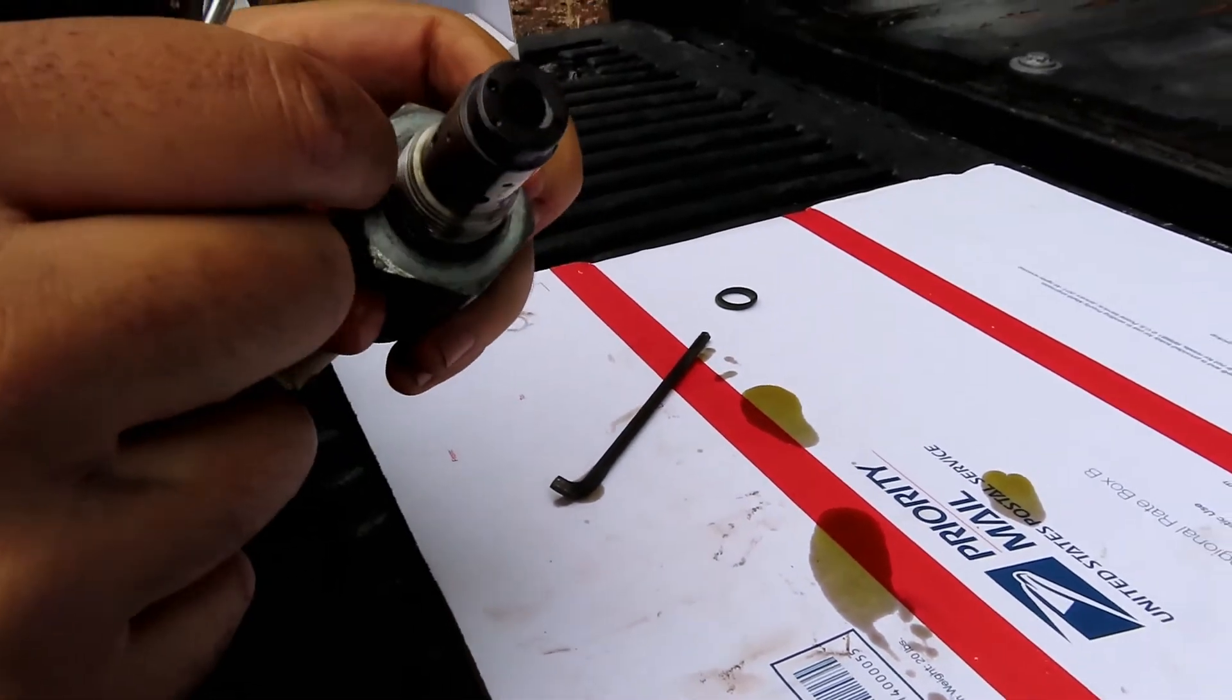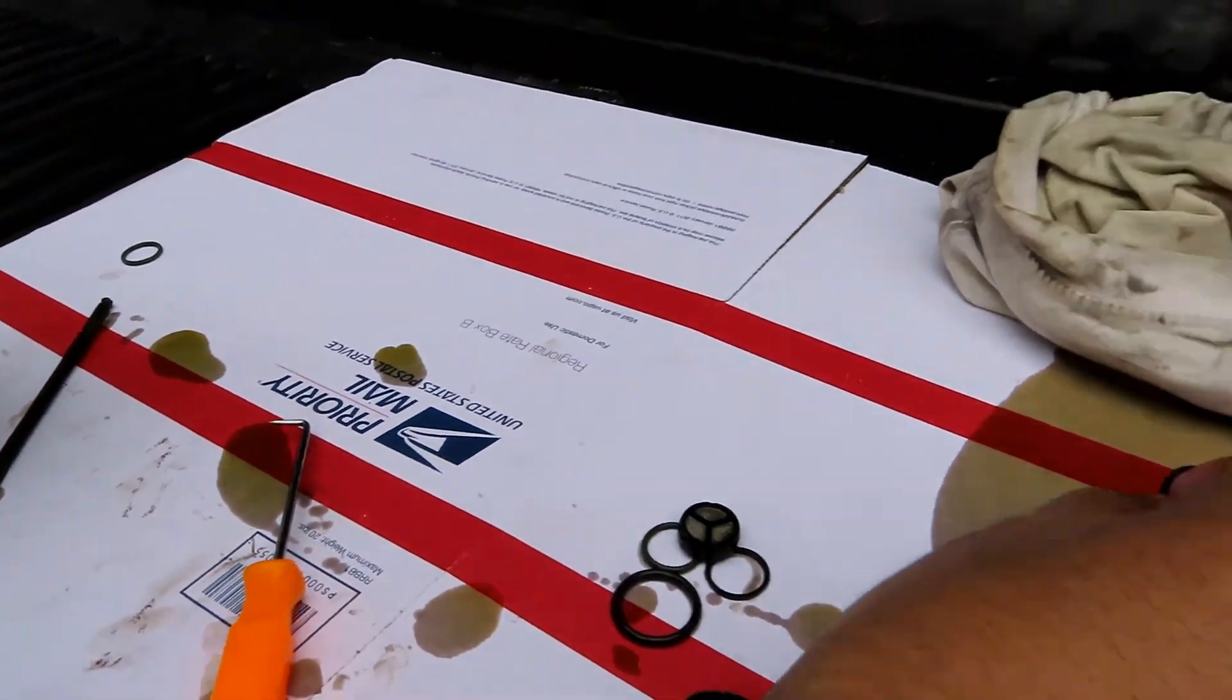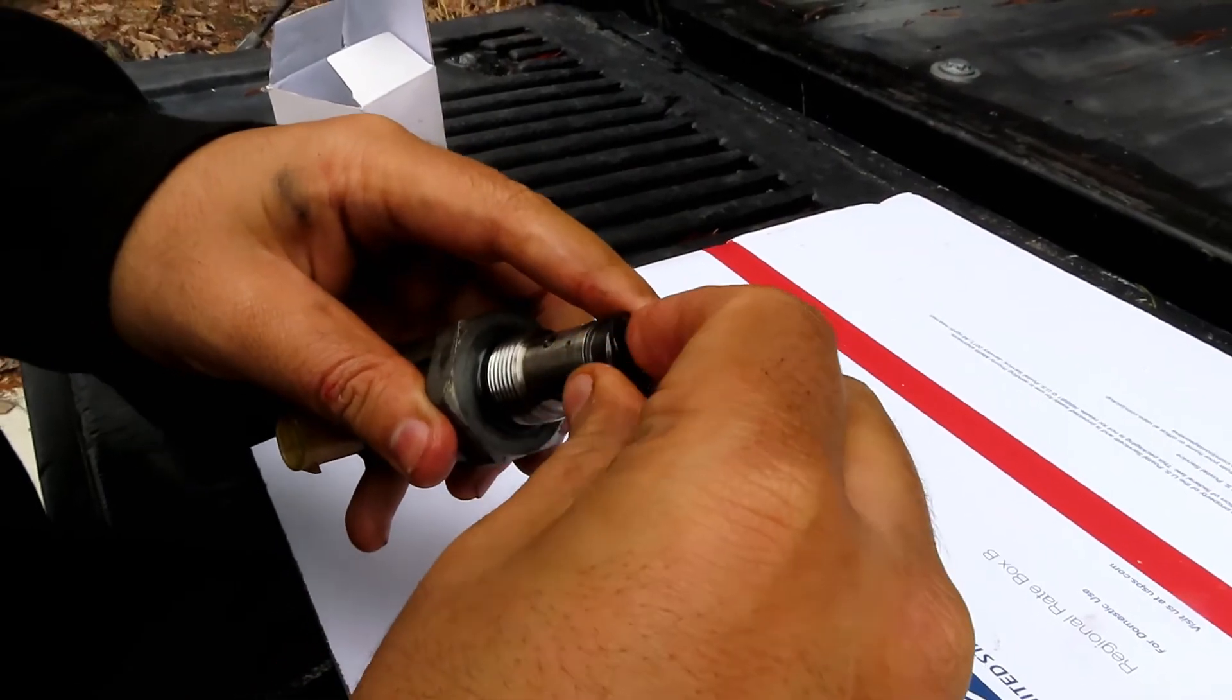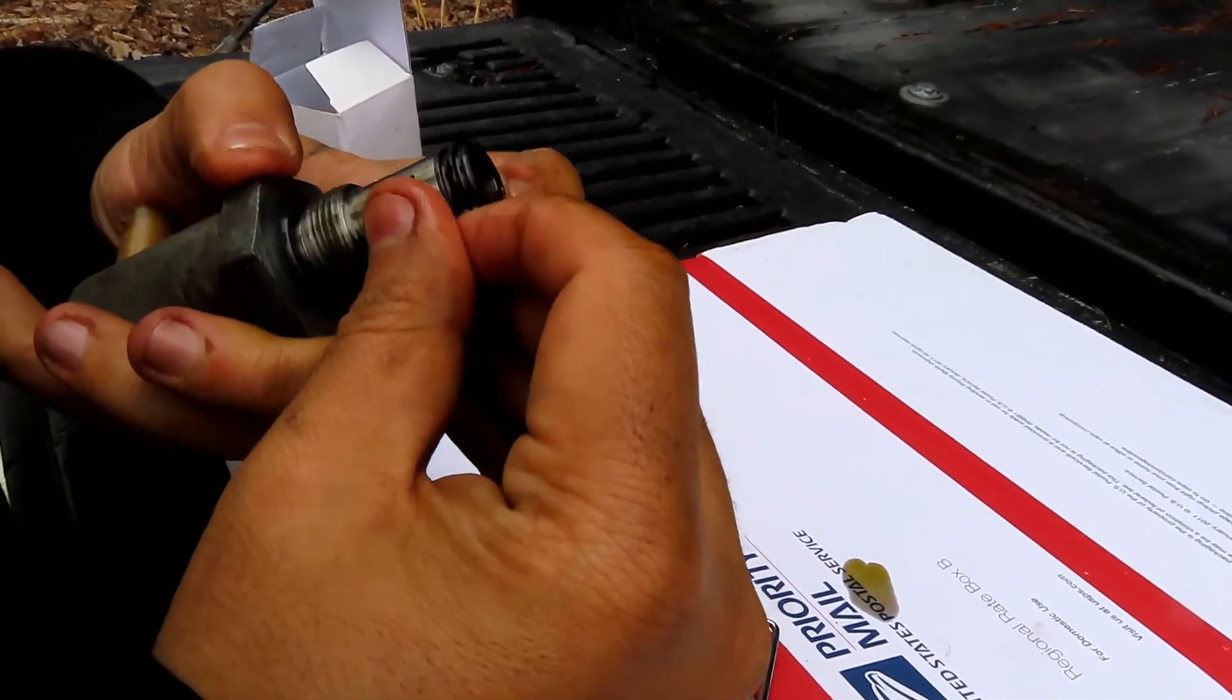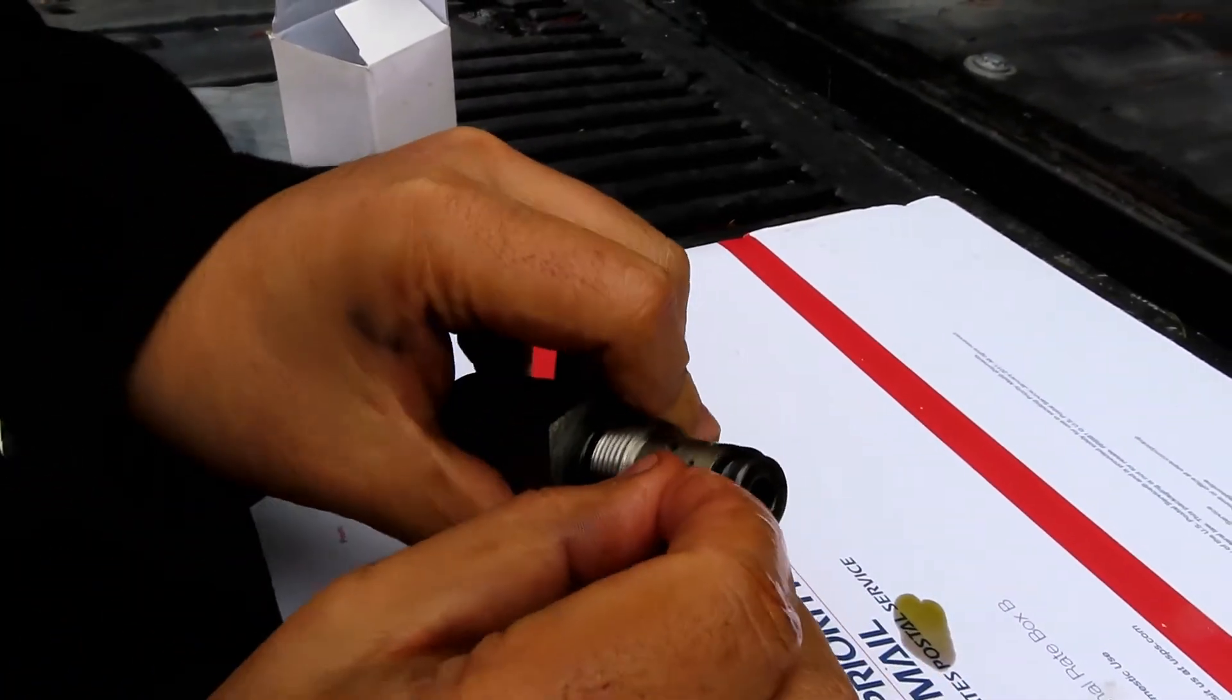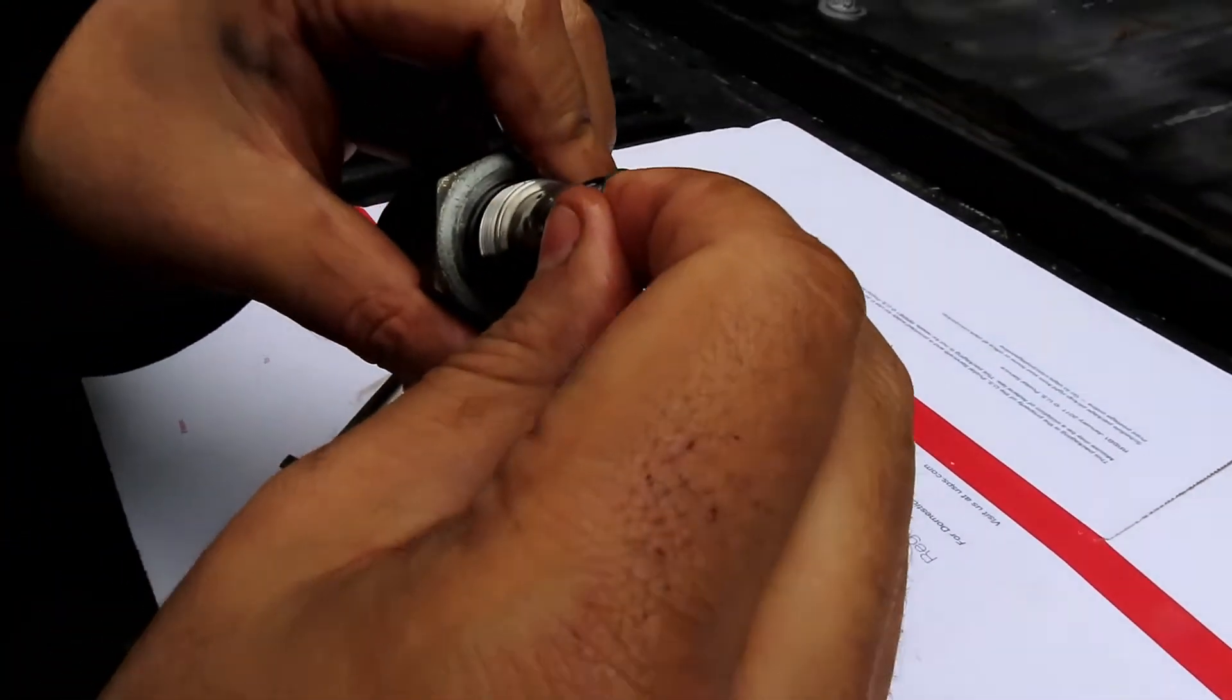Use some oil. The bottom seal is installed. Next step is your black seal. Put some oil on it and that one goes on pretty easy. Carefully put it on so you don't roll it. And the last seal is the greenish colored one.